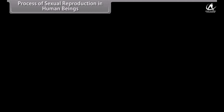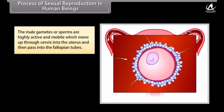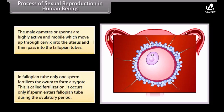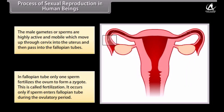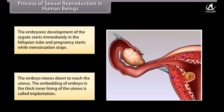The male gametes or sperms are highly active and mobile, moving up through the cervix into the uterus and then into the fallopian tubes. In the fallopian tube, only one sperm fertilizes the ovum to form a zygote — this is called fertilization. It occurs only if the sperm enters the fallopian tube during the ovulatory period. The embryonic development of the zygote starts immediately in the fallopian tube, pregnancy begins, and menstruation stops. The embryo moves down to reach the uterus, and the embedding of the embryo in the thick inner lining of the uterus is called implantation.